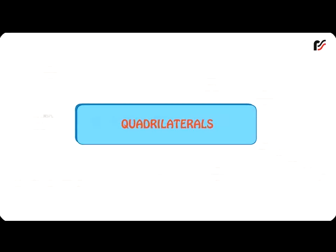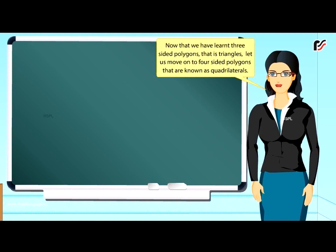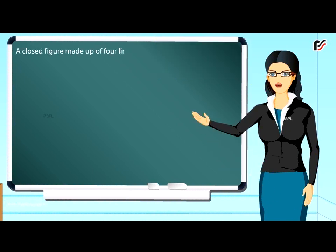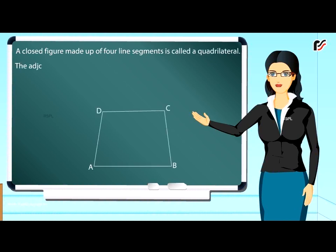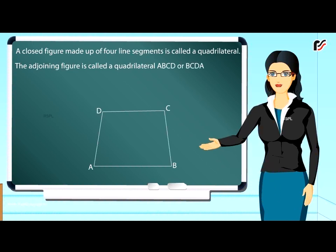Quadrilaterals: Now that we have learnt three-sided polygons, i.e. triangles, let us move on to four-sided polygons that are known as quadrilaterals. A closed figure made up of four line segments is called a quadrilateral. The adjoining figure is called quadrilateral ABCD, or BCDA, or CDAB, or DABC.